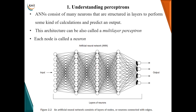Here we can see an artificial neural network consisting of many layers with n number of nodes, and each node is called a neuron, which are stacked one over the other. An artificial neural network consists of many neurons structured in layers to perform some kind of calculations and predict an output. This architecture can also be called a multi-layered perceptron, and each node is called a neuron.